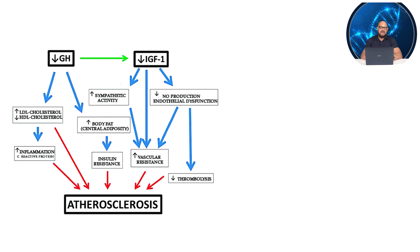Insulin-like growth factor 1 then has an impact on the growth and metabolism of peripheral tissues, leading to increased metabolism, anabolism, and cellular replication and division.